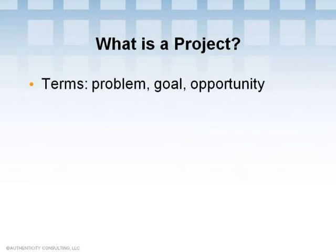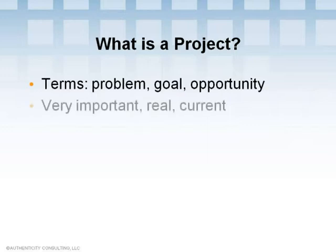Project is the term used in classic action learning to describe the problem or the opportunity that an organization or an individual works on in the program. This series uses the term project, sometimes problem and priority interchangeably, because action learning literature, educators, and practitioners often do that as well. A hallmark of action learning is that the project must be current, real, and very important to the client and the members of the group. The client is the person who owns the problem.